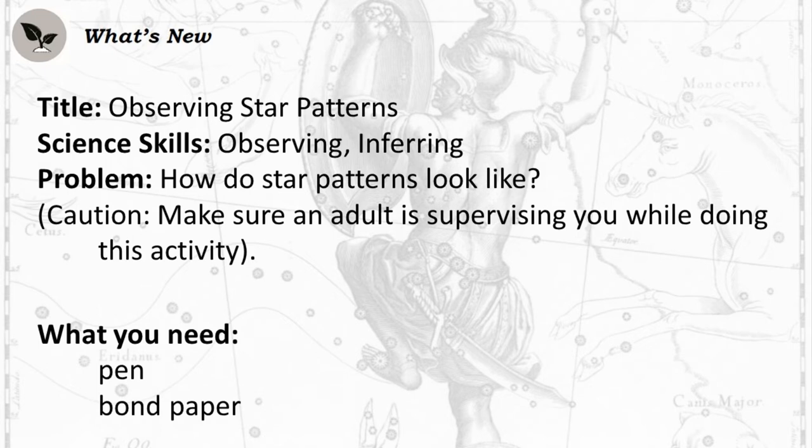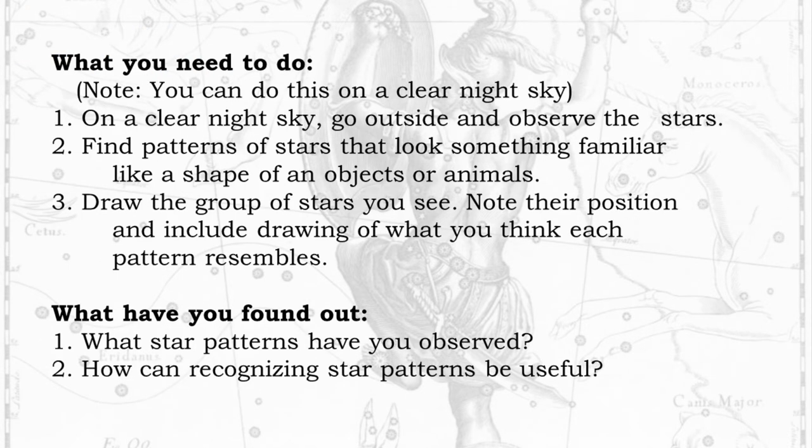Title: Observing Star Patterns. Science Skills: Observing, Inferring. Problem: How do star patterns look like? Caution: Make sure an adult is supervising you while doing this activity. What you need: pen, bond paper. What you need to do — note: you can do this on a clear night sky. 1. On a clear night sky, go outside and observe the stars. 2. Find patterns of stars that look something familiar, like a shape of an object or animals. 3. Draw the group of stars you see. Note their position and include a drawing of what you think each pattern resembles.